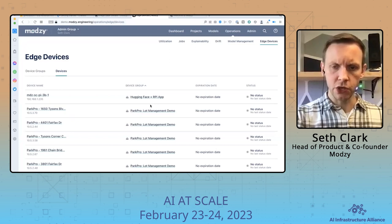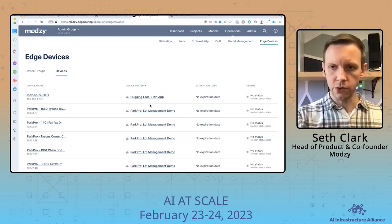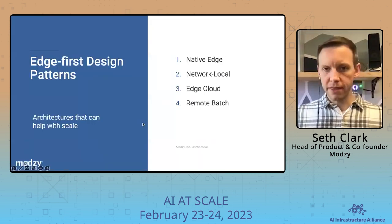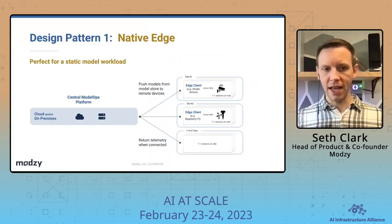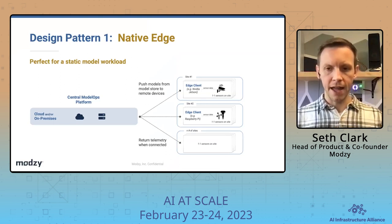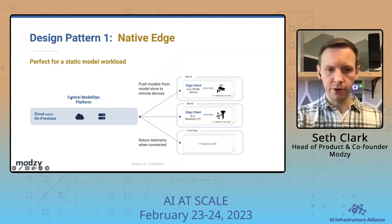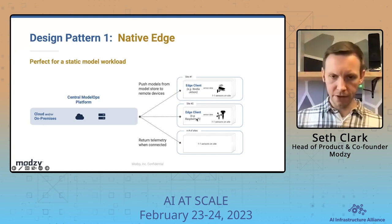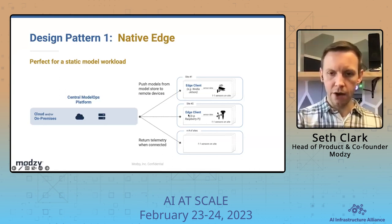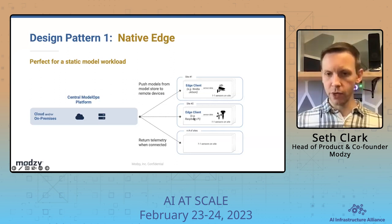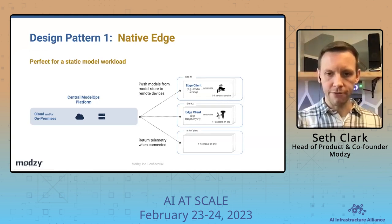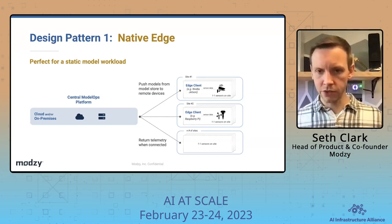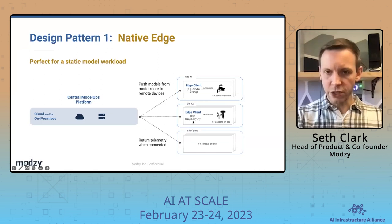Let's go back to the slides and look at the patterns that emerge from an edge-first standpoint. The first is what we call native edge — perfect for static model workloads. This is the exact example we just showed: a central model ops platform uses Modsy to remotely push models to an edge client like a Raspberry Pi, which then runs the model and provides telemetry data when connected. Our tiny BERT model is running on the Raspberry Pi, doing its job, and we can orchestrate it, turn it on or off, or send an update all from the central platform — making it convenient for sending models out to dozens, hundreds, or thousands of devices.